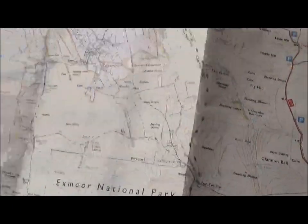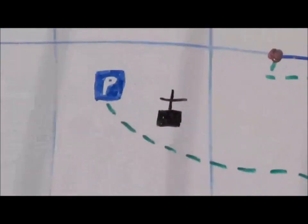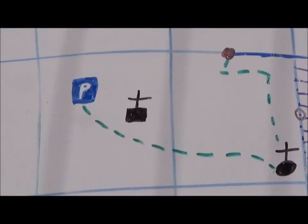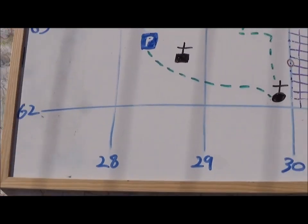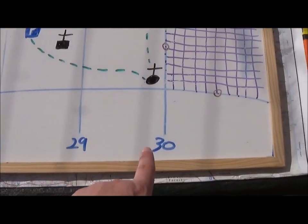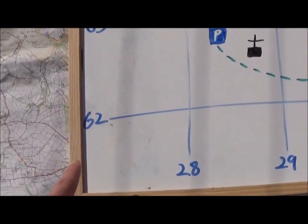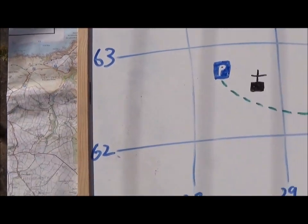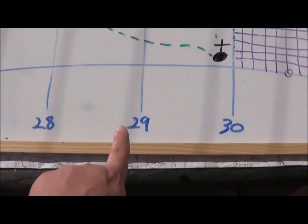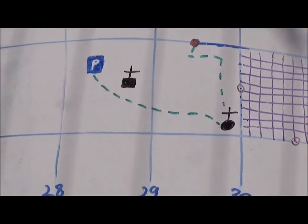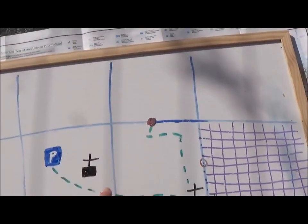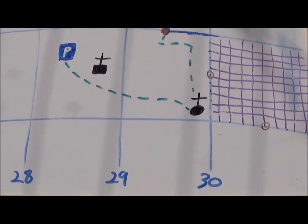We're going to start with a four digit grid reference. So on your map, you'll notice that there's numbers along the bottom and numbers going up the side. And there's a nice easy saying: along the corridor and up the stairs, or along the corridor and down the stairs if you're working with the numbers at the top of the map.